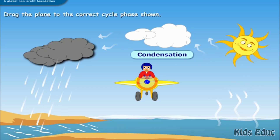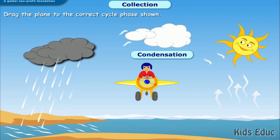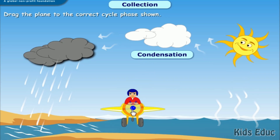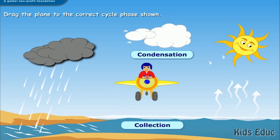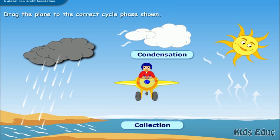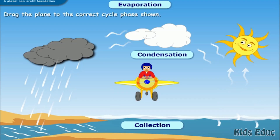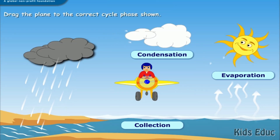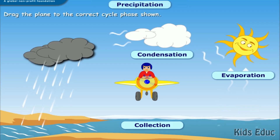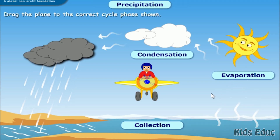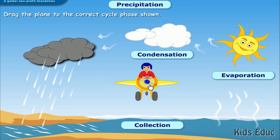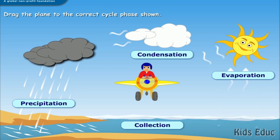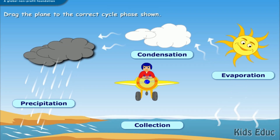That's right! Good job. Drag the plane to the correct phase. That's right! Good job. Drag the plane to precipitation. Great job! Now you know the four phases of the water cycle.